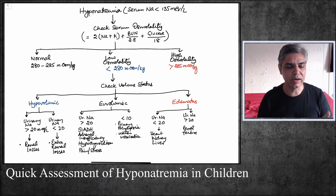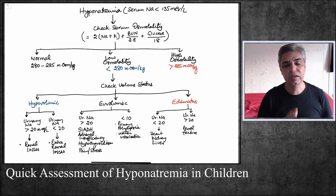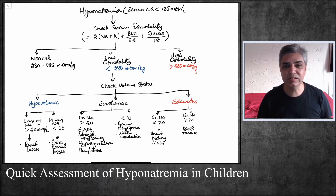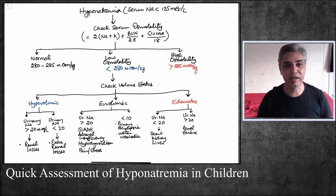If the serum osmolality is normal and you get hyponatremia, you have to look for conditions like very high triglycerides or high protein levels that are actually pushing down the sodium levels in the blood. If the serum osmolality is high — more than 285 — then there may be active solutes in the blood, such as high blood sugar (hyperglycemia) or ethanol intoxication, which would cause high osmolality and low serum sodium.